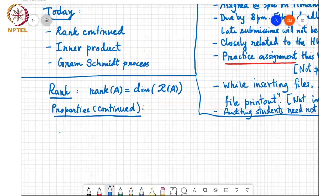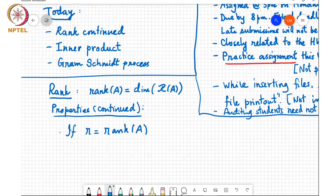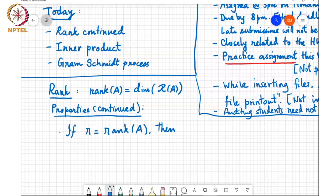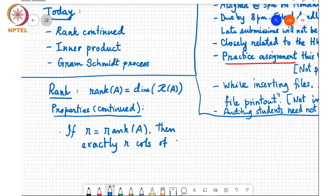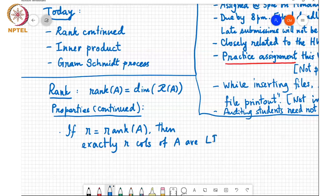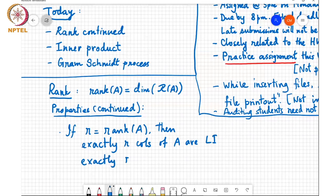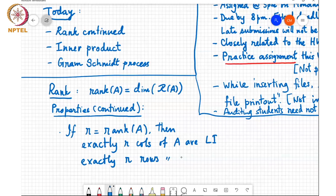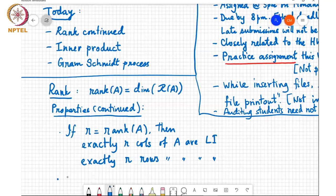We'll continue with these properties. The next property is that if the rank of A is R, then exactly R columns of A are linearly independent and exactly R rows of A are linearly independent.